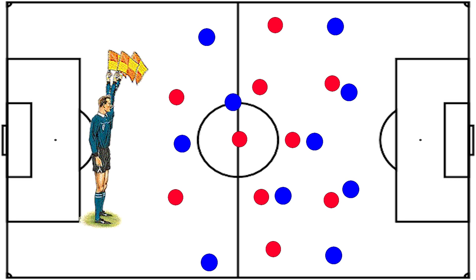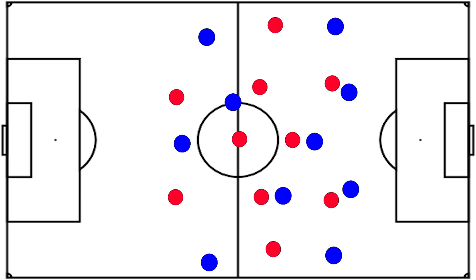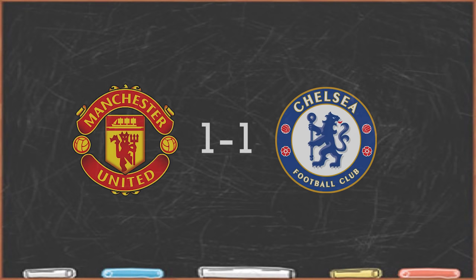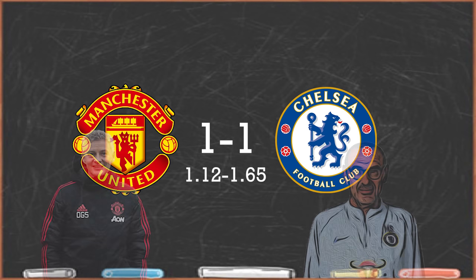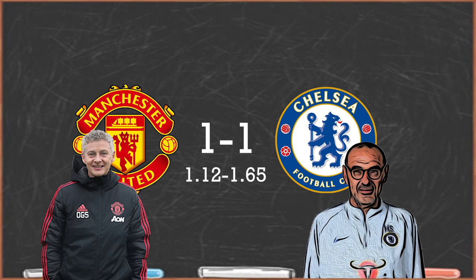However, Higuain often strayed offside, so Chelsea were not able to take full advantage of the space behind the fullbacks. In the end, a stalemate was the result, although XG was in favour of Chelsea with 1.65 compared to 1.12. This was one of Ole's better tactical performances, but Chelsea will be happier with the result.